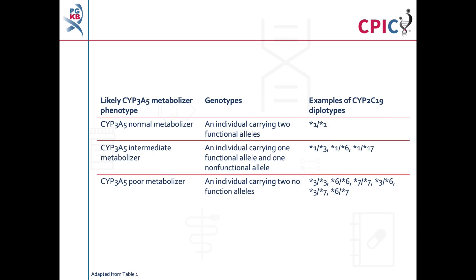There are currently 9 defined alleles of CYP3A5, known as star alleles. A CYP3A5 allele definition table along with other gene information tables for CYP3A5 can be accessed at the PharmGKB website, or by using the link in the description below this video.